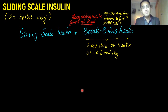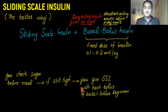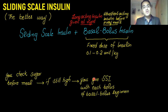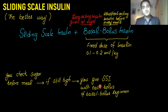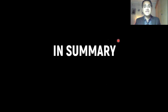That's the right way of using sliding scale insulin: you have a fixed dose at the back, and if the glucose levels are uncontrolled and extra insulin is needed, that extra insulin can be calculated by sliding scale insulin and added to each and every bolus before the meal. You check the sugar before a meal, if it is still high, you apply sliding scale insulin, calculate the dose, and add it to the basal bolus regimen.